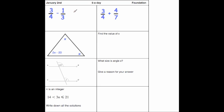So for 3 quarters subtract 1 third, we want to get a common denominator. Because it's 3 and 4, the first number in both of the times tables is 12. So let's go for 12ths.